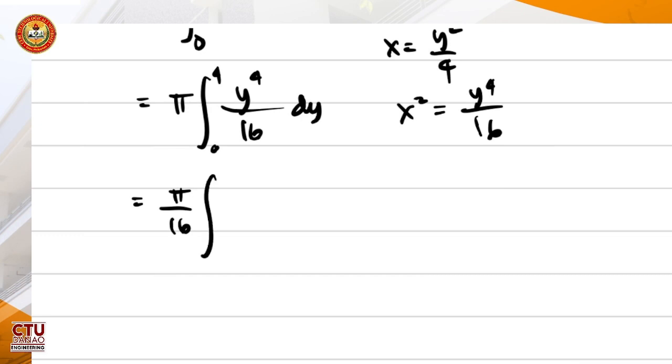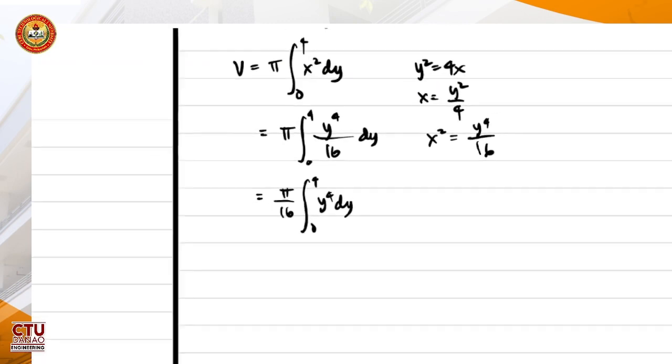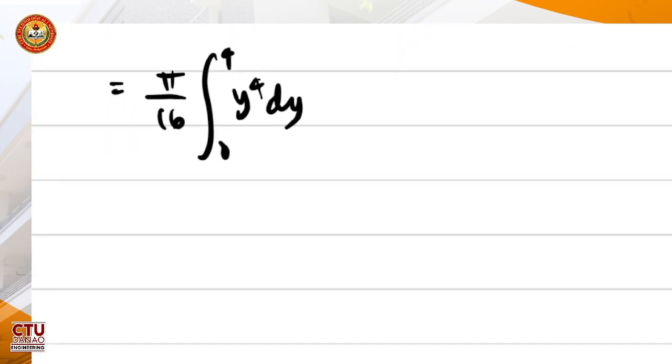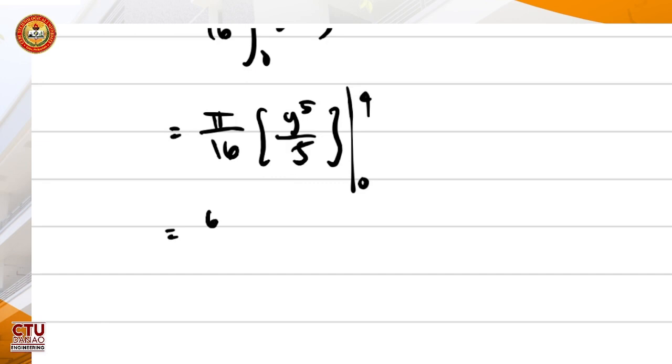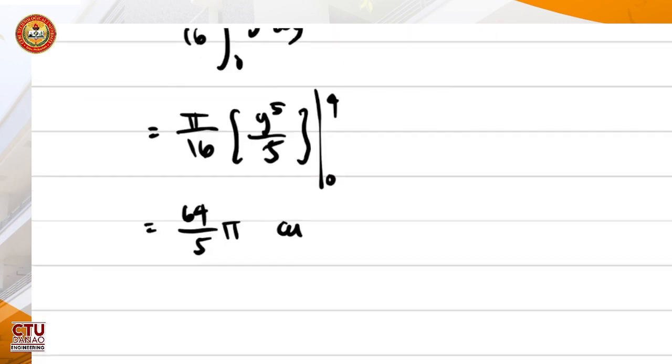So this will be the integral: pi over 16 times the integral of y raised to 4 dy from 0 to 4. Pi over 16 times y raised to 5 over 5 from 0 to 4. So that would be 64 pi over 5 cubic units.